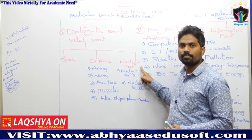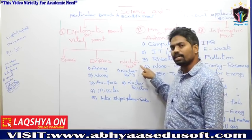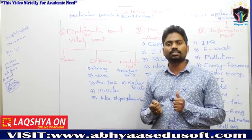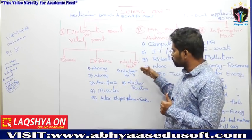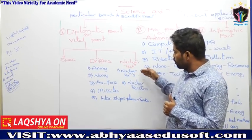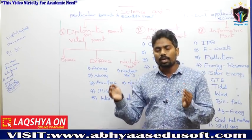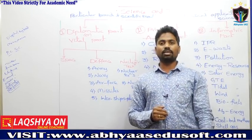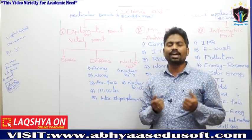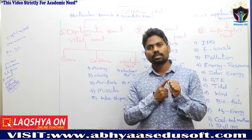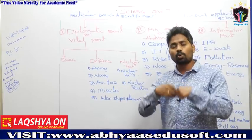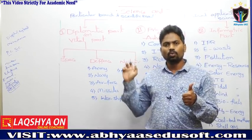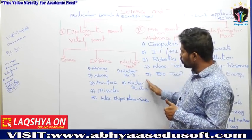The diplomatic or vital part is classified into three types: one is space, the second is defense, and the third is nuclear technology. Under nuclear technology, subtopics include types of nuclear reactors — pressurized water reactors, fast breeder reactors — and types of nuclear reactions: nuclear fission (splitting) and nuclear fusion (combination). Based on these reactions, hydrogen bombs and atomic bombs will be discussed, as well as nuclear explosion tests conducted in Rajasthan's Thar Desert.